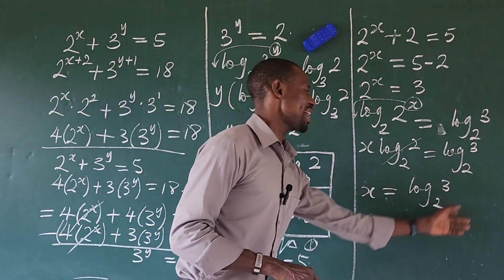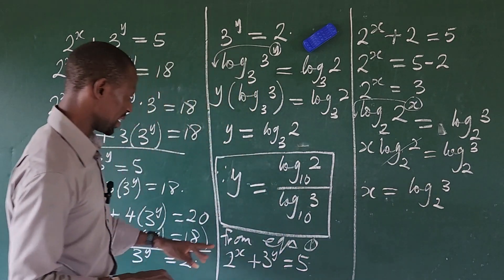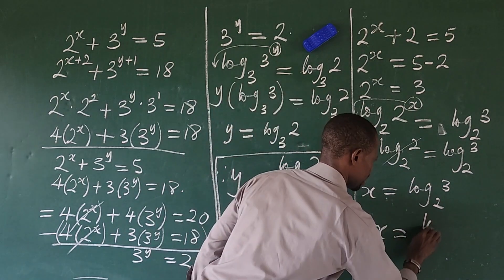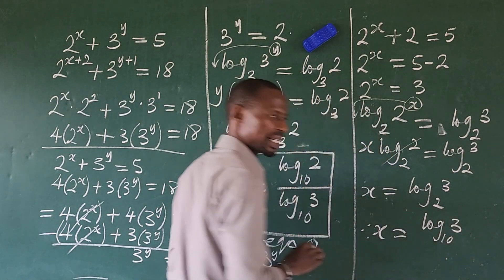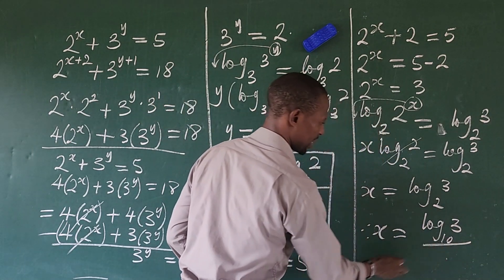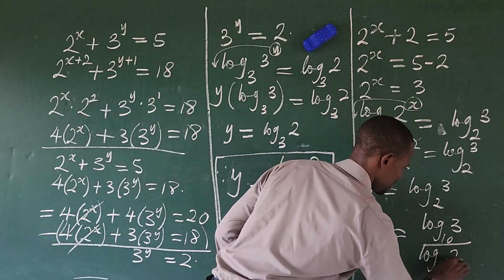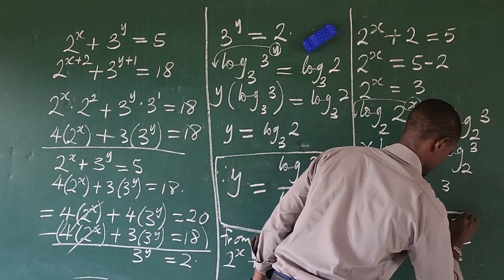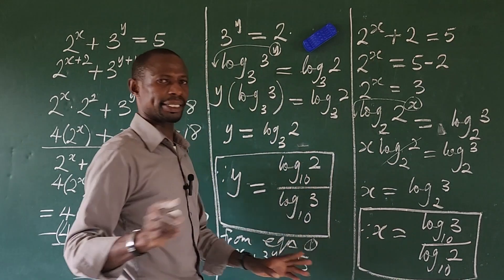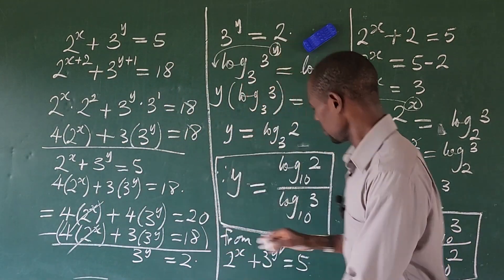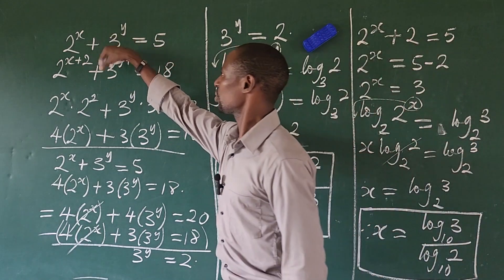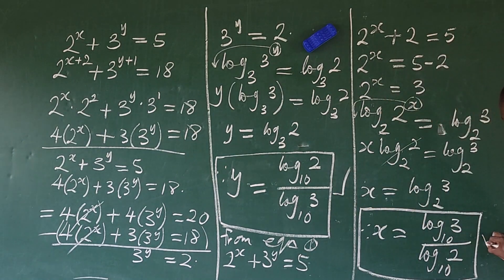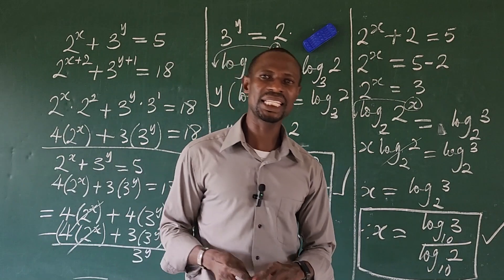Applying the change of base law as we did for y, we can rewrite this as x equals log 3 base 10 divided by log 2 base 10. We can use a calculator to simplify both x and y, and when substituted back they satisfy our original equations. So this is the value of y and this is the value of x. Simple.